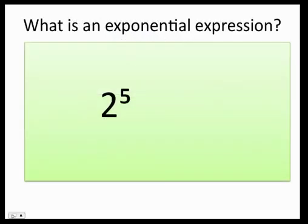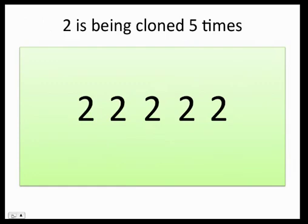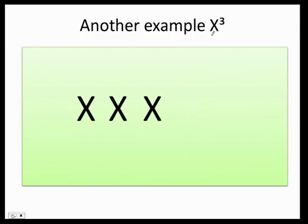An exponential expression looks like this. You're going to have the exponent on the top, and the base is basically here, the 2. What does this mean, 2 to the 5th? That means that 2 is being cloned 5 times. So, this is the same as 2 times 2 times 2 times 2. Or, let's say that you have x cubed. That is the same as x times x times x.